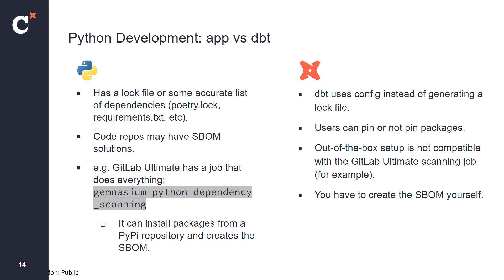If we can create an SBOM, we can answer those three questions about licenses, vulnerabilities, and all these things. For a regular Python application, it's pretty easy — we'll probably have a lock file with all the dependencies and versions. All we have to do is take those dependencies, put them in the SBOM format, generate the SBOM in your pipeline, upload it, and scan the SBOMs regularly. With dbt, this gets more complicated. dbt doesn't have a lock file that lists all the Python packages you're using. It has a lock file for dbt packages, but if you want to see all the third-party Python packages being used, you'll have to go digging through all your model configs.